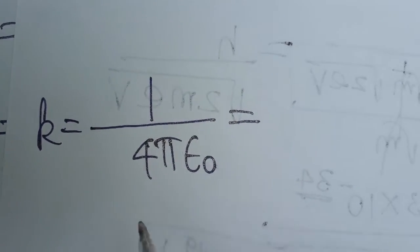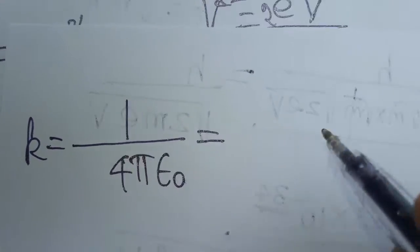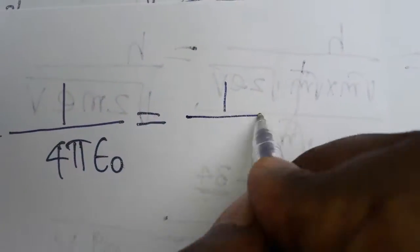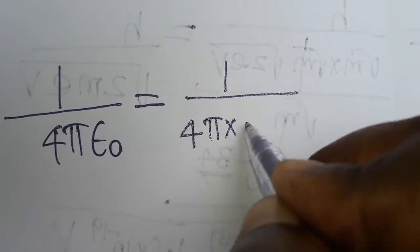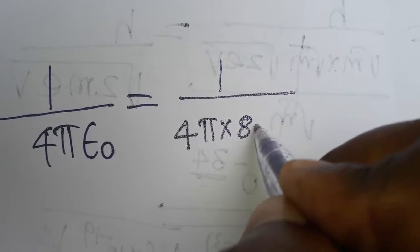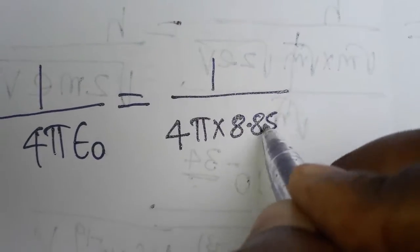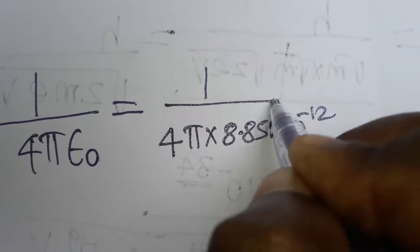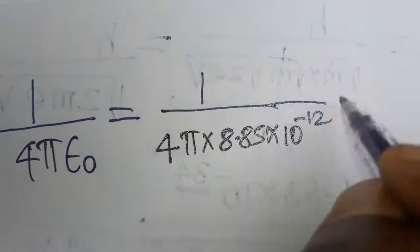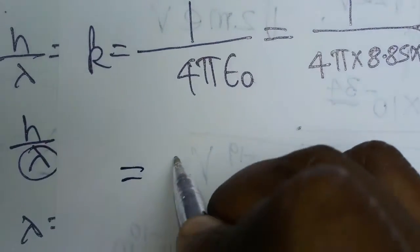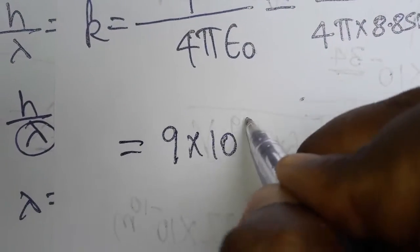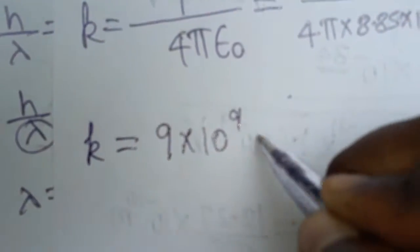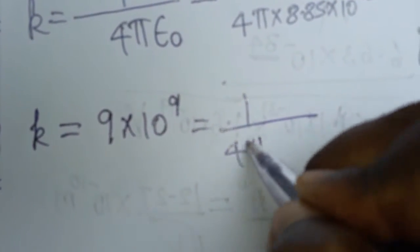The value of epsilon naught — 1 divided by 4 pi into epsilon naught — will be 8.85 into 10 power minus 12. From this whole calculation we get a very easy value: 9 into 10 power 9. So k, which equals 1 divided by 4 pi epsilon naught, always has the value 9 into 10 power 9.